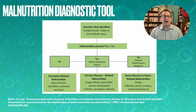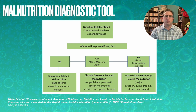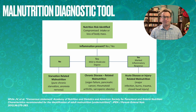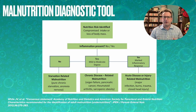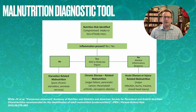I wanted to discuss the malnutrition diagnostic tool. If you haven't seen it before, this is a tool created by the AND and ASPEN to help with diagnosing malnutrition. The first nutrition risk identifier is either compromised intake or loss of body mass — that's the trigger. The second question is: is inflammation present? That is the only lab question we get out of this tool — it only asks about inflammation, and to what degree.